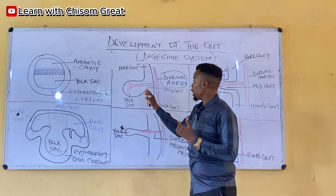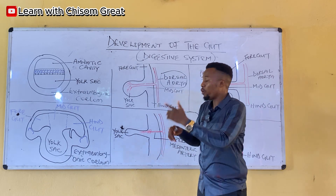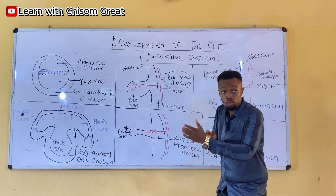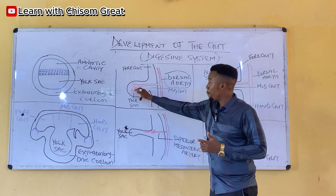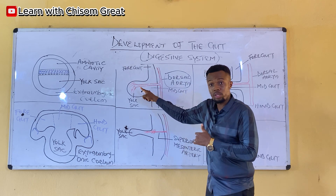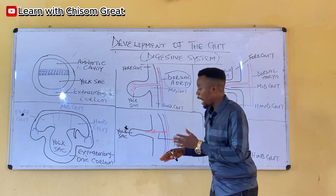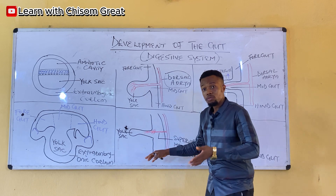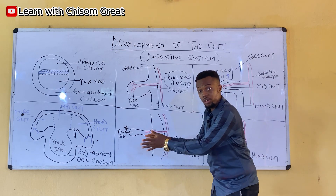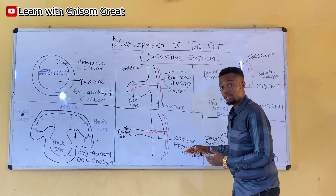The yolk sac begins to form a tubular structure — it begins to become compact. As the yolk sac narrows down to form a tube, the ventral part of the vitelline artery begins to obliterate and degenerate, remaining only the branch at the dorsal aspect. This remaining branch is now known as the superior mesenteric artery.